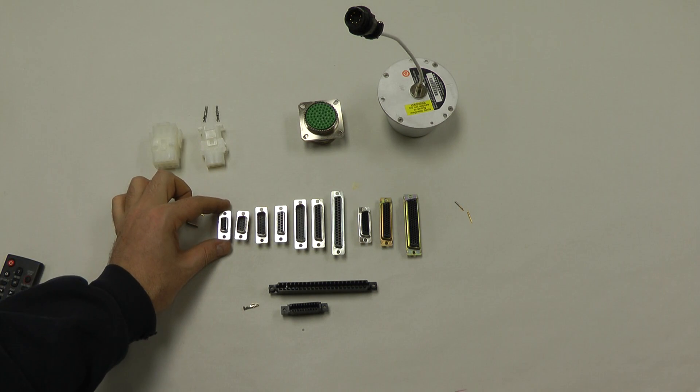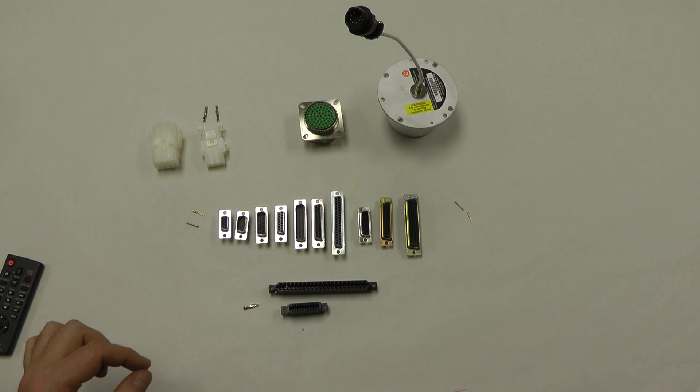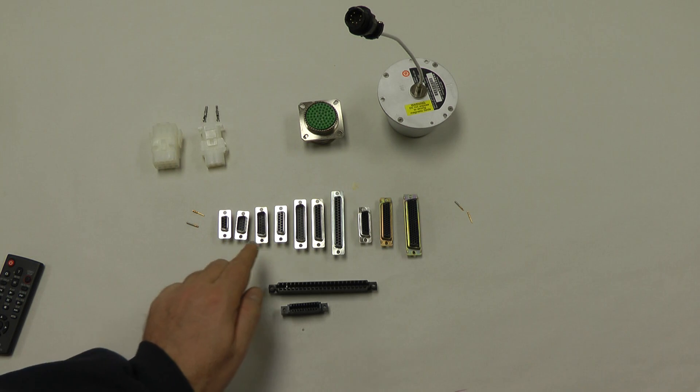There's male and female. They come in a lot of varieties and a lot of sizes. Down here, all of these from here on over are what we call standard density. They have two rows of pins.